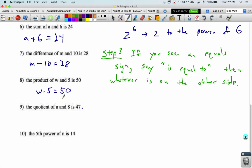Quotient of a and eight. I want you to start writing these as fractions. So a over eight is 47.